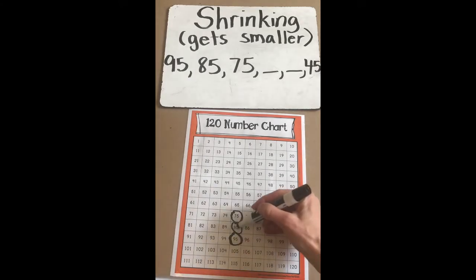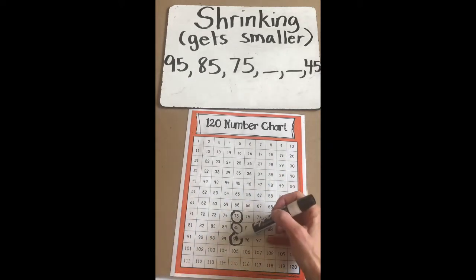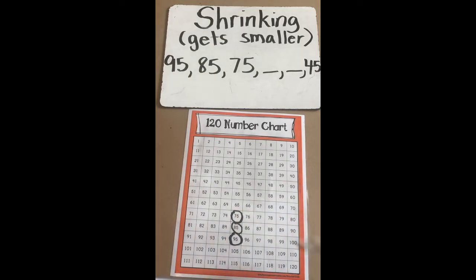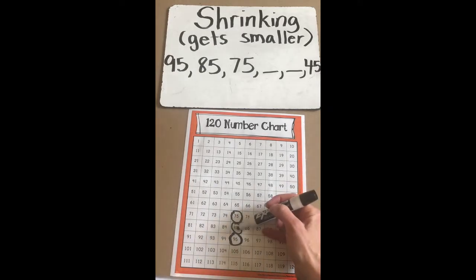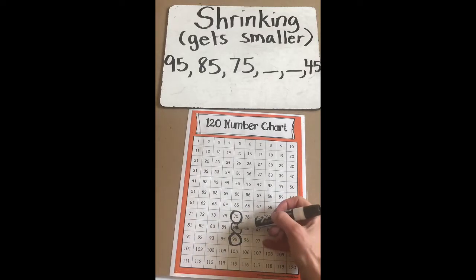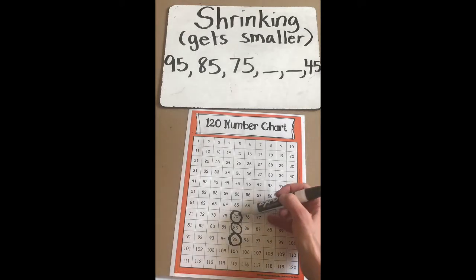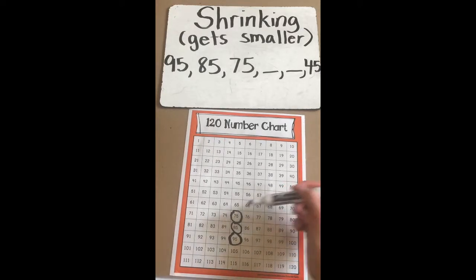That's right. It's basically above the other. And we know that above a number is 10 less. 85 is 10 less than 95 because 8 tens is 10 less than 9 tens. And the same goes for 75 — it's 10 less than 85.